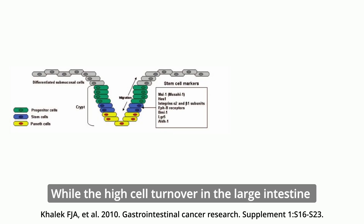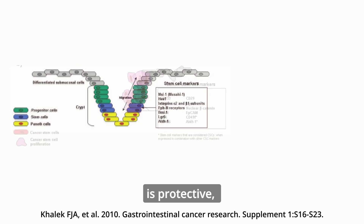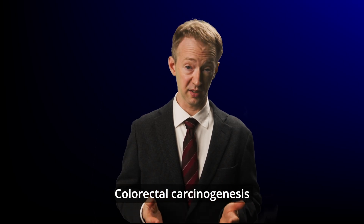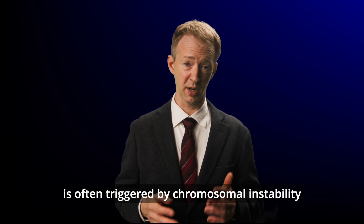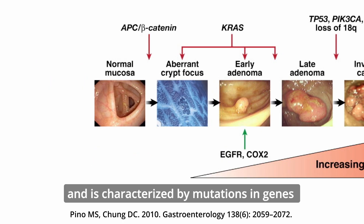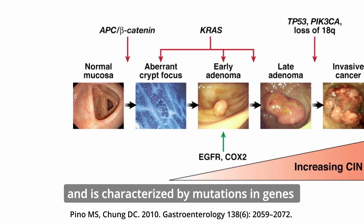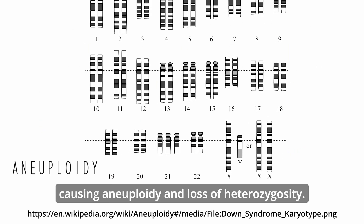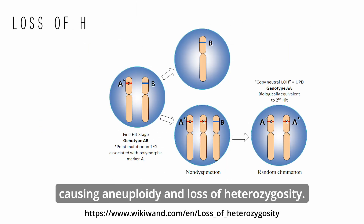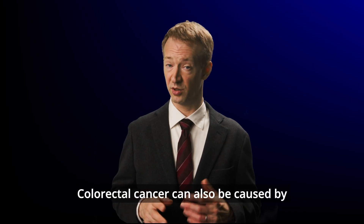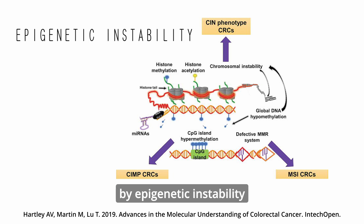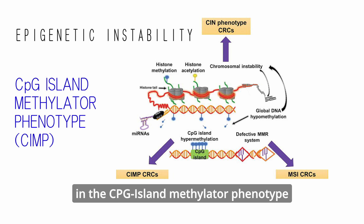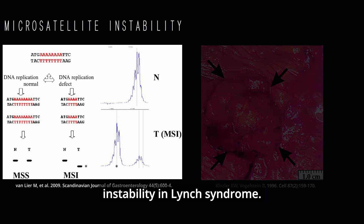While the high cell turnover in the large intestine is protective, it also poses a cancer risk. Colorectal carcinogenesis is often triggered by chromosomal instability and is characterized by mutations in genes such as APC, KRAS, and TP53, causing aneuploidy and loss of heterozygosity. Colorectal cancer can also be caused by epigenetic instability in the CpG island methylated phenotype, and microsatellite instability in Lynch syndrome.